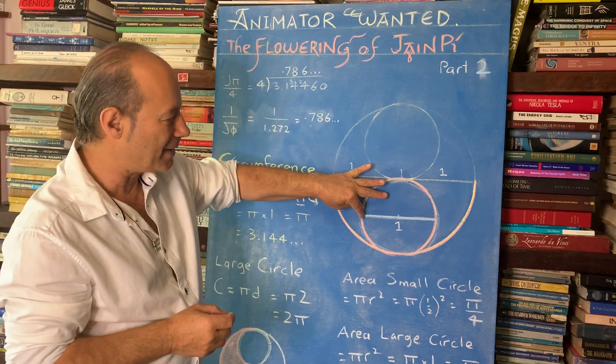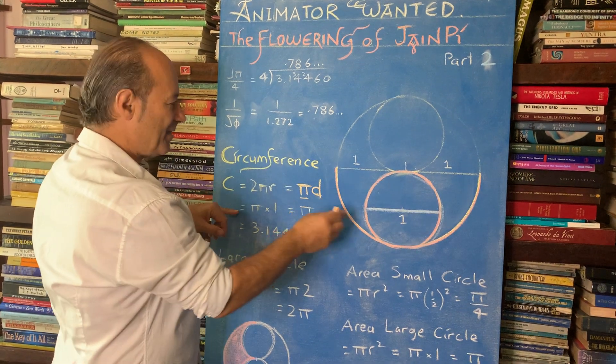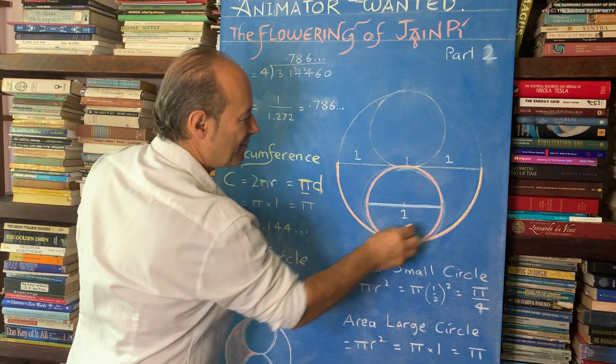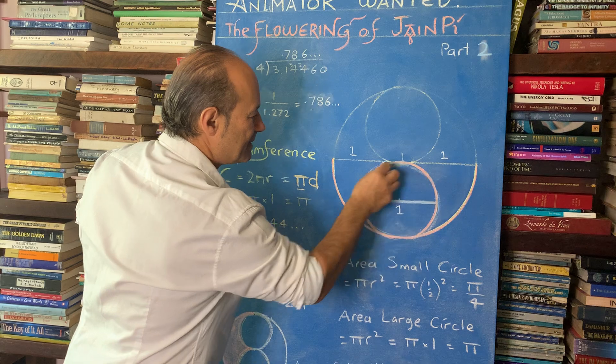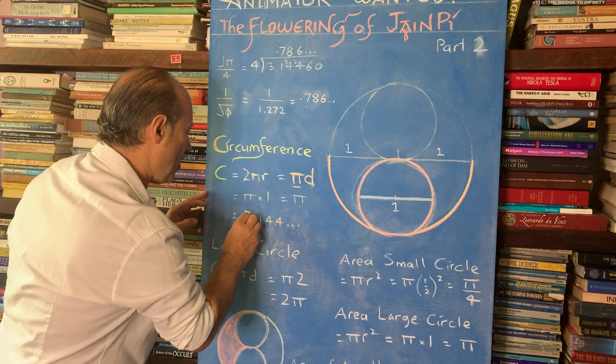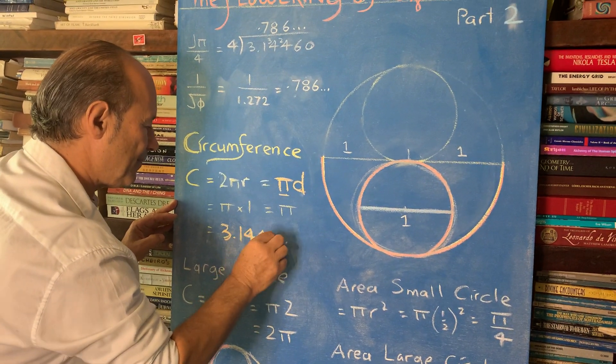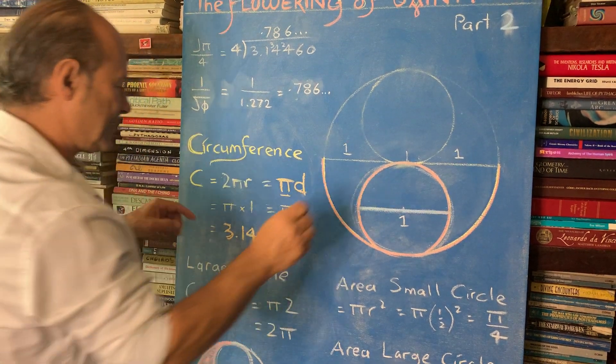So you know from school that the circumference of any circle, the circumference of this circle is called 2 pi r. But 2 r, if that's a radius and a radius, that's really the diameter. So the circumference of a circle is called pi times d. And we're going to show here that pi, the true value of pi is 3.144. That's what this is all about. So by having a diameter of one, we can say that this distance here, if this is one, this distance here is pi. It's 3.144.